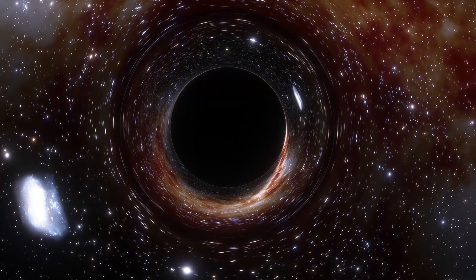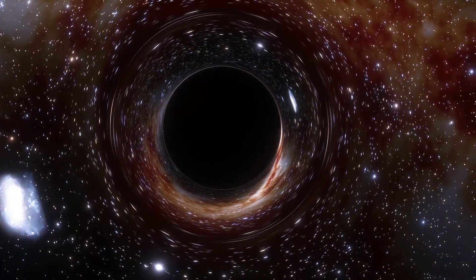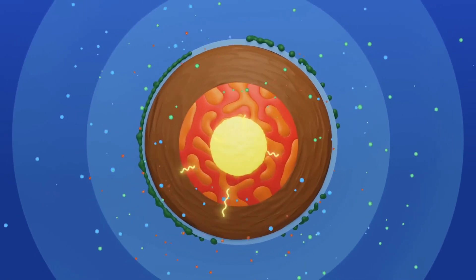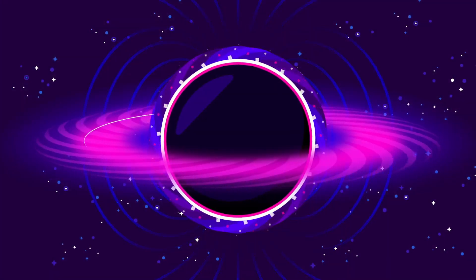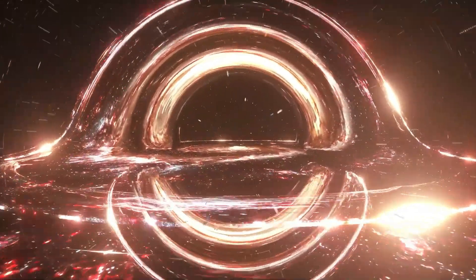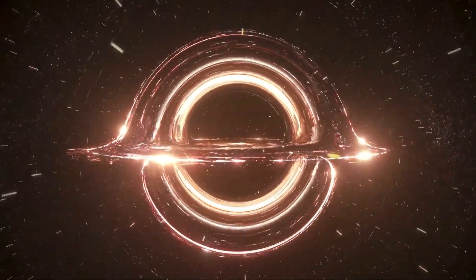Distinguishing between a singularity and the Earth's core involves their structural disparities. The Earth's core, being a cohesive object with a shape conducive to gravitational stability, stands in contrast to a black hole's singularity, a point without dimension. In a black hole, all forms of matter undergo compression to an infinitesimally small state, devoid of existence, while a planet like Earth maintains a spherical form.